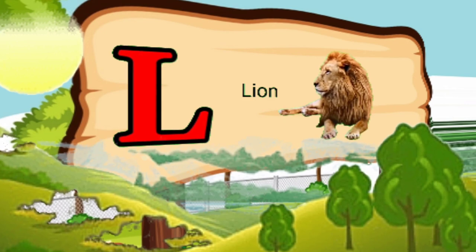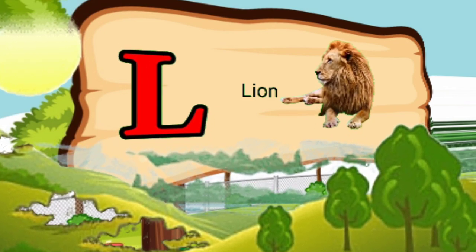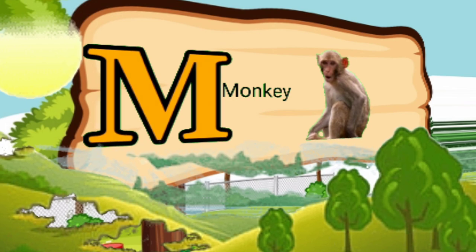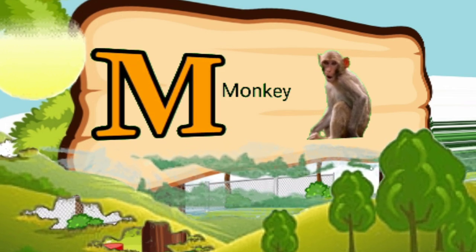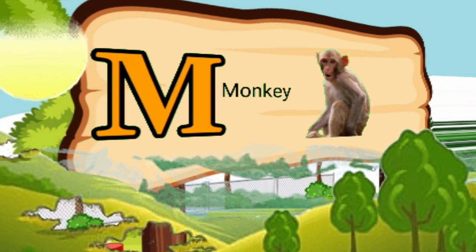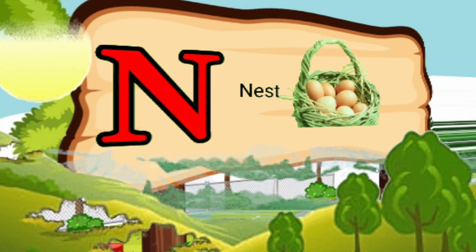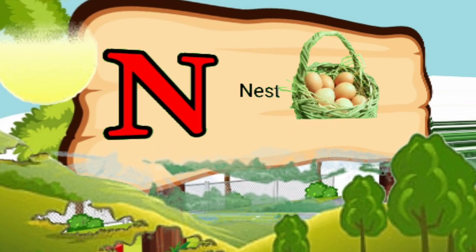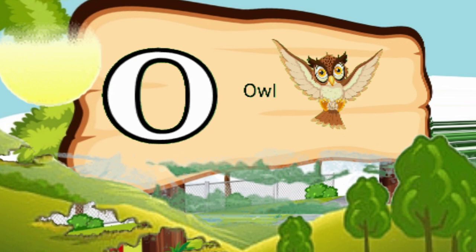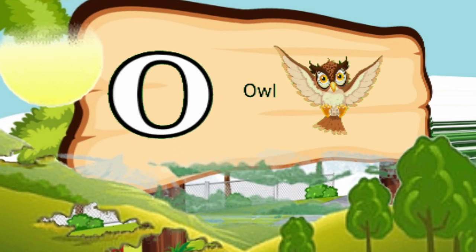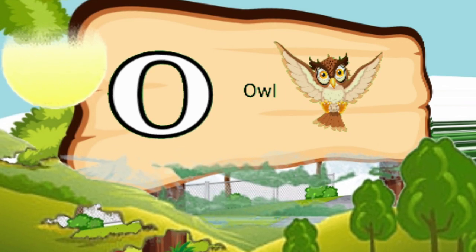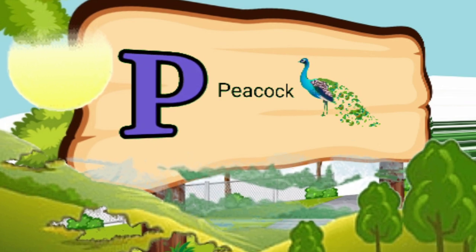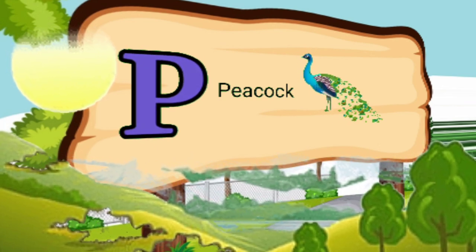K for kite. L for lion. M for monkey. N for nest. O for owl. P for parrot.